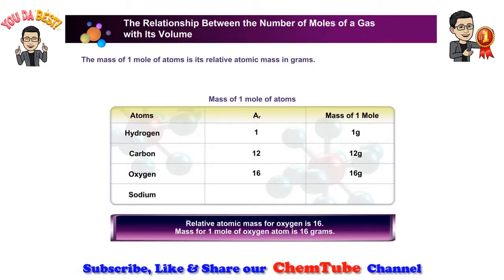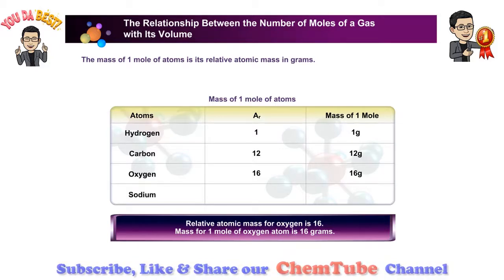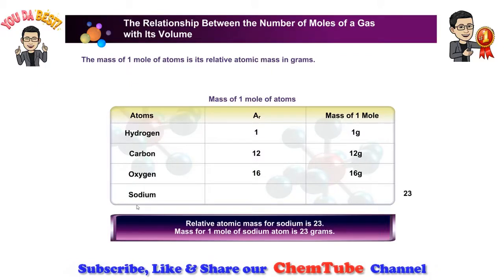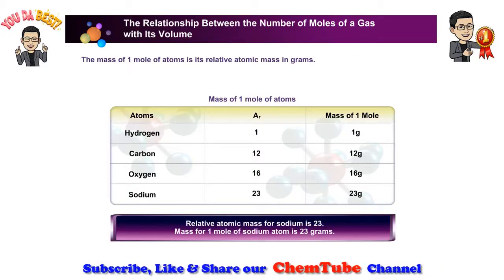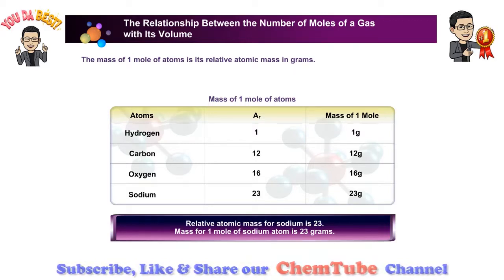The relative atomic mass for oxygen is 16, so the mass of one mole of oxygen atoms is 16 grams. The relative atomic mass for sodium is 23, so the mass of one mole of sodium atoms is 23 grams.